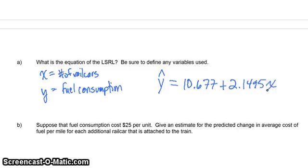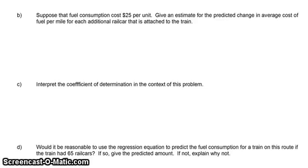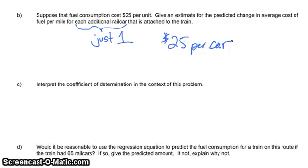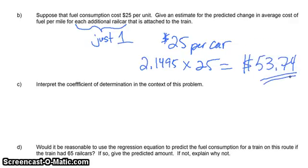For Part B: suppose that fuel consumption costs $25 per unit. Give an estimate for the predicted change in average cost of fuel per mile for each additional rail car attached. Each additional rail car is just one at a time, so we're going to pay $25 for one rail car. When we look at our slope, the units are per mile versus the number of rail cars. So I have 2.1495 times 25, and that gives me the expected $53.74 for the average cost for an additional car.